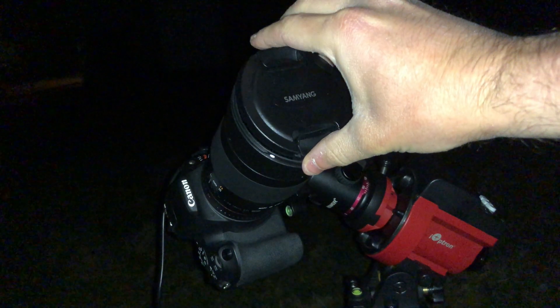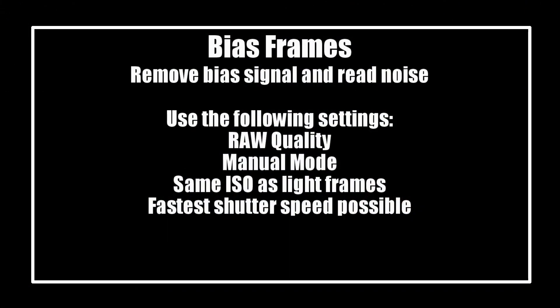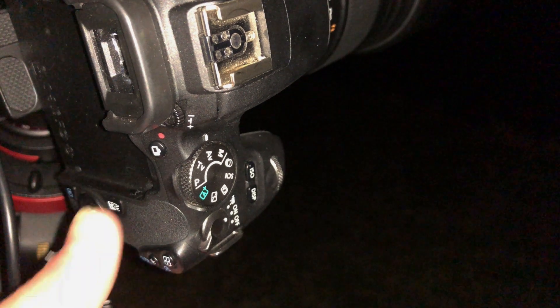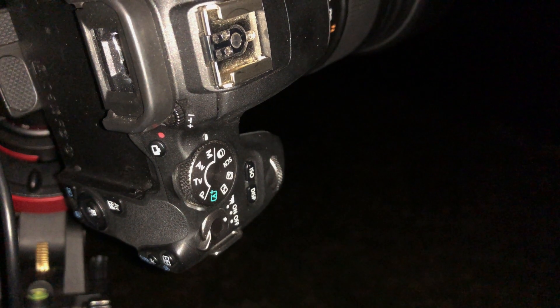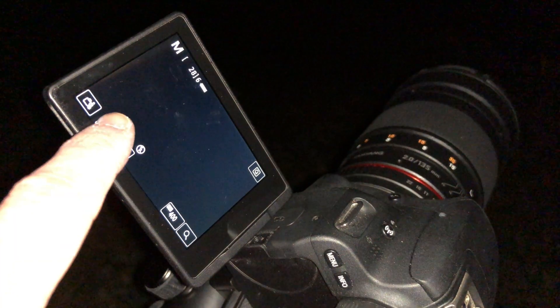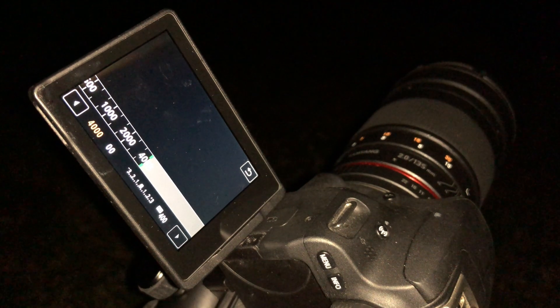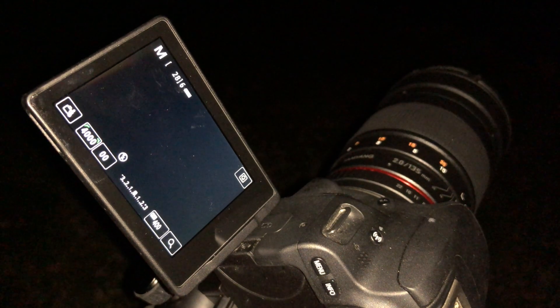Our next type of frame is the quickest to take and simply requires you to place the cap on your lens to make sure that no light gets onto your sensor. These bias frames will improve our image by removing the bias signal and read noise from our sensor. Switch your camera back to manual mode and be sure to keep the same RAW quality and ISO setting that you've used all night. Go into your settings and select the fastest shutter speed available for your camera — for this camera that's a shutter speed of 4000. With all of these settings in place, click your shutter to take as many bias frames as you'd like. On most nights I like to take around 75 of these as well.